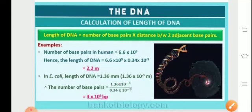According to Chargaff's rule, the number of purines is always equivalent to the number of pyrimidines. In this module, we had a detailed discussion on the structure of DNA, the nucleic acids DNA and RNA, and Chargaff's rule. Hopefully you must have understood all the concepts thoroughly. Thank you for being a patient listener.